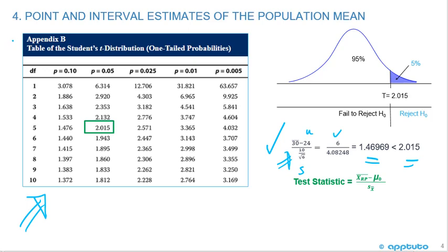We need to go to the appendix at the back of the chapter. We're going to look at the table of the student's t-distribution, one-tailed probabilities. The degrees of freedom for this was 5, which was the six observations minus 1. And we went to the 5% probability column, and we have our critical value of 2.015. Our calculated test statistic was less than the 2.015, so we failed to reject the null hypothesis. If it was more than the critical value, we would reject.